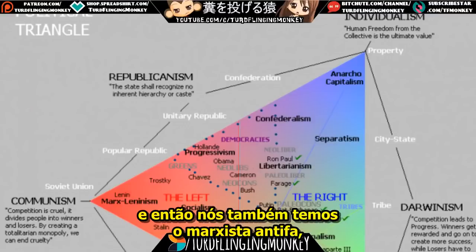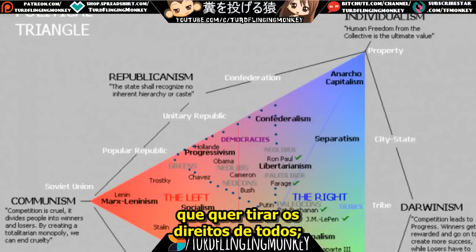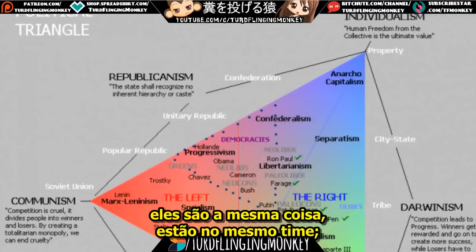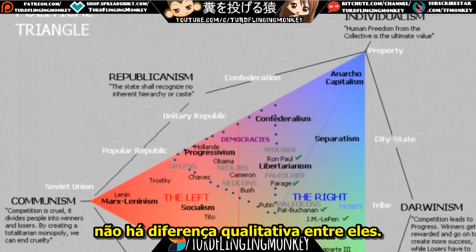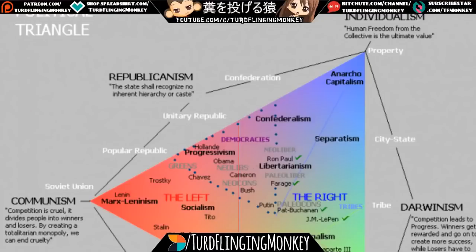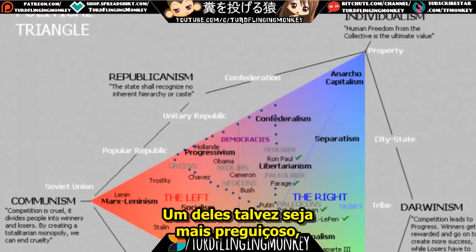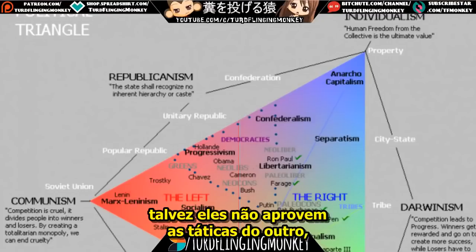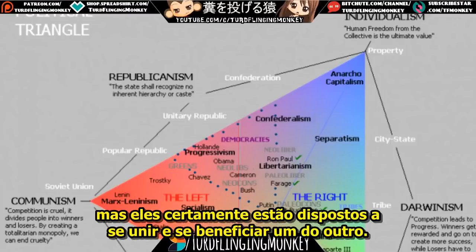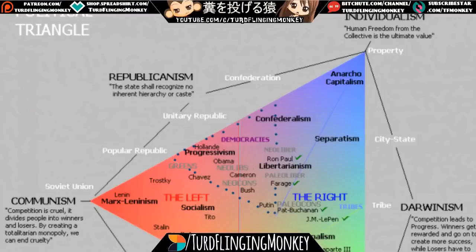What I see is Marxists who just want free stuff, who we roughly approximate as the libertarian left. And then we have the Marxists who want to bash the fash and take everyone's rights away. They're the same — they're on the same team. There's no qualitative difference between them. Maybe they don't approve of each other's tactics, but they go along with them and benefit from them.